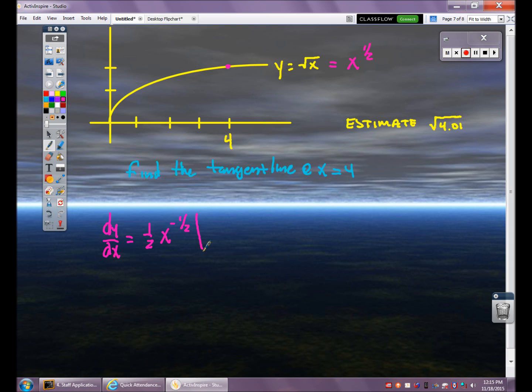Now I want to evaluate that at x equals 4. Instead of x to the negative 1/2, I'm going to write that as the square root of x in the denominator and plug in a 4 for x. That's going to give me 1/4. This is my slope of the tangent line at x equals 4.